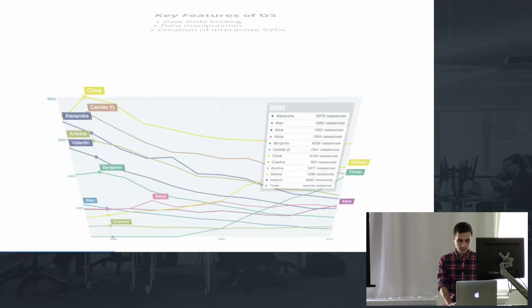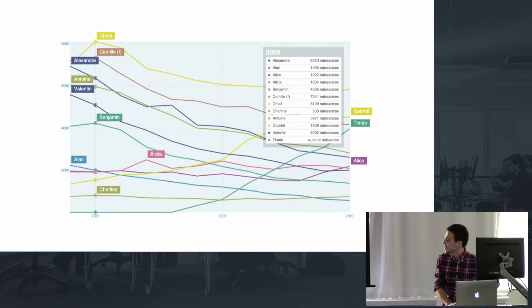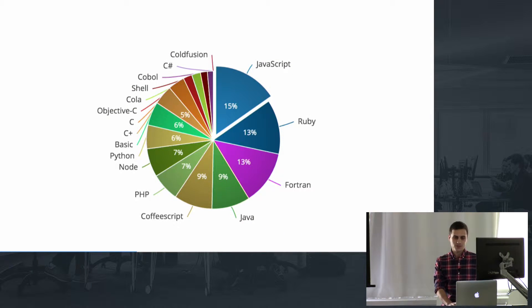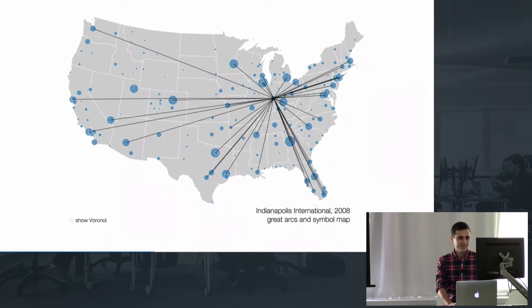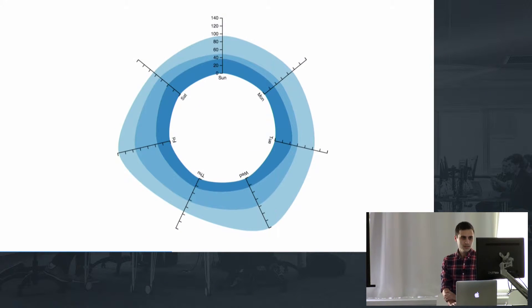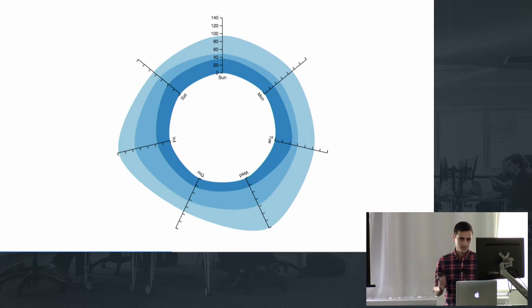Some examples of what it can do: a pretty standard line graph — in this case, the trend of French first names over 10 years. A standard pie chart — I don't know what criteria they used, but JavaScript is winning. Another form of chart pointing out different city locations — you've probably seen this where airlines show where different flights fly to. And this one is a measurement of precipitation or something like that across different days of the week — much more informative than if those numbers are just thrown at you.